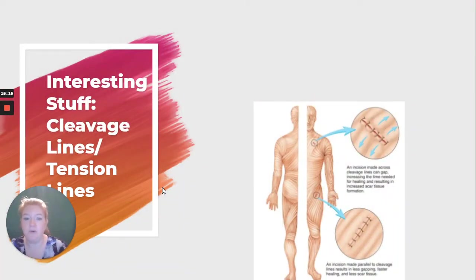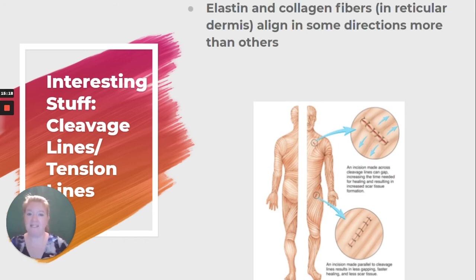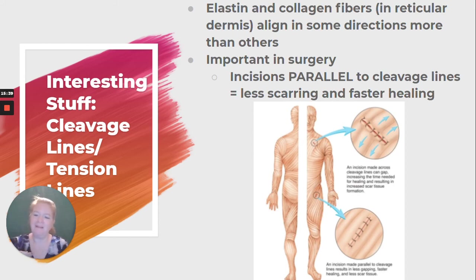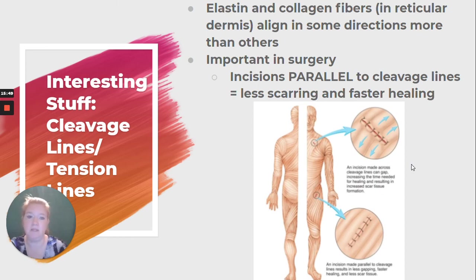Cleavage lines or tension lines. We have elastin and collagen fibers in our dermis — specifically in the reticular dermis — and they align in some directions more than others in areas of our body. They're important for surgery: a surgeon in a non-emergent situation is going to want to make an incision parallel to those cleavage lines to minimize scarring, because cutting across cleavage lines is more likely to scar.